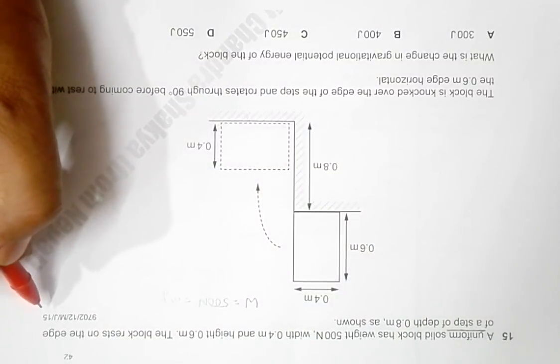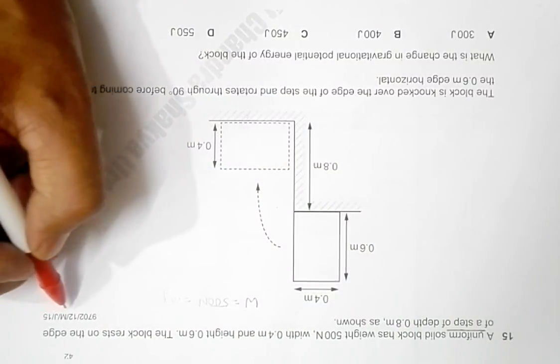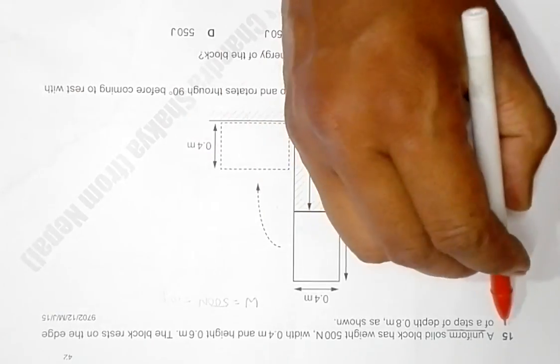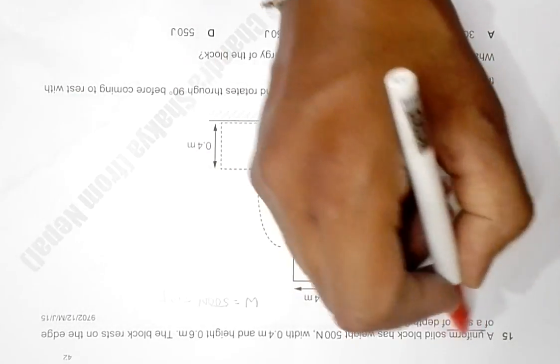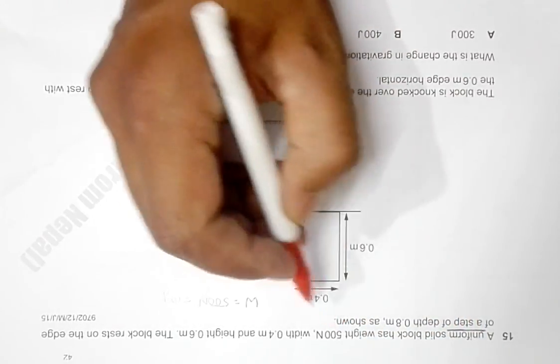We have the question of 2015 May June paper 1 2, and the question number is 15. It says that a uniform solid block has a weight of 500 Newton.